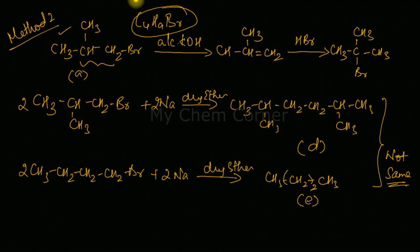Compound C is confirmed as an isomer of A — same molecular formula C4H9Br but a different structure. Also, D and E are not the same. Therefore, the correct structure of A is 1-bromo-2-methylpropane. When solving questions that ask you to identify a starting material, you must try different structural possibilities until all conditions are satisfied.